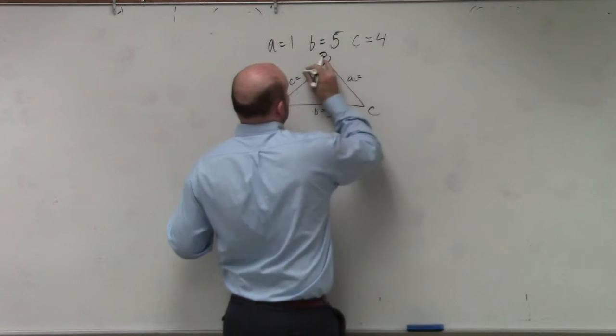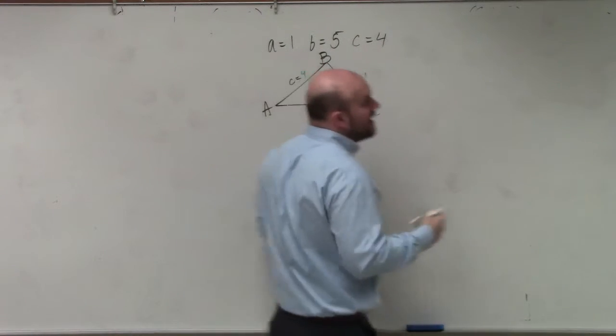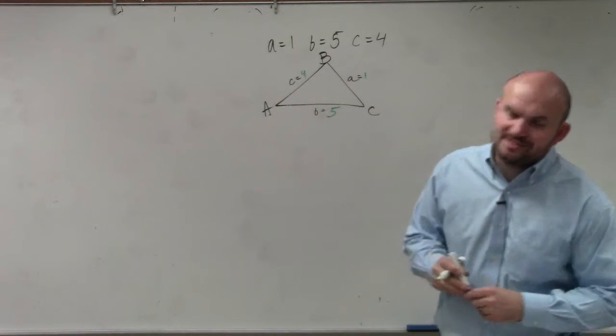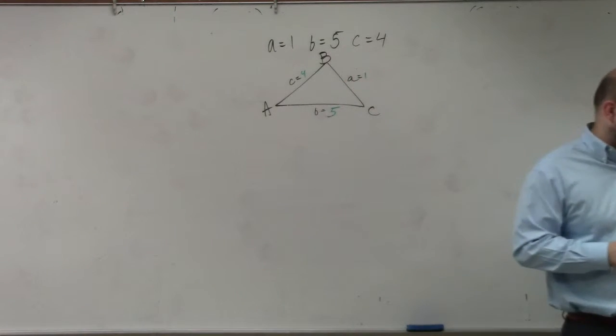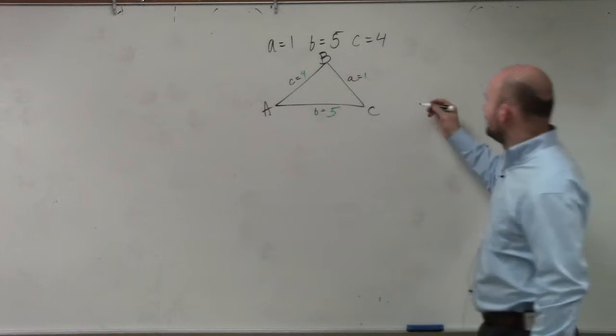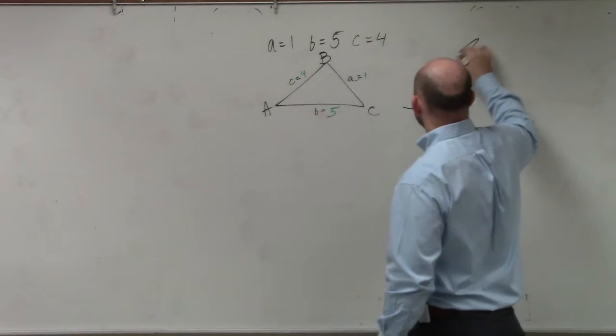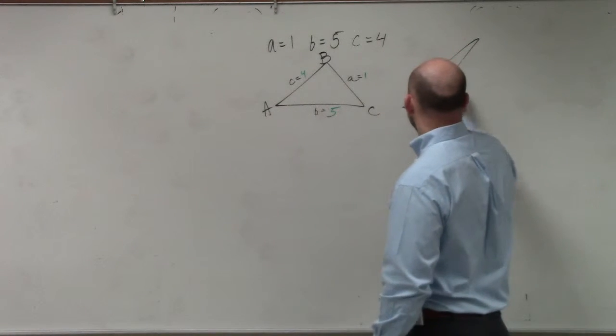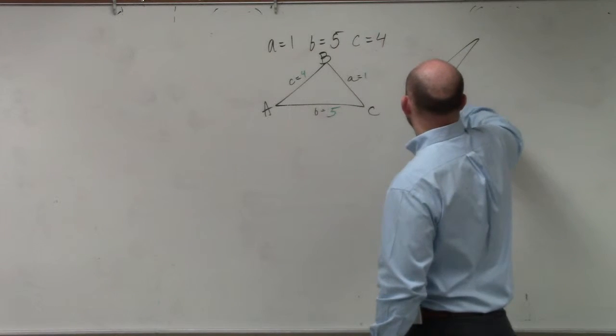So I have 5, here we have 4, and here is 1. Now obviously, ladies and gentlemen, I know my triangle is not proportional, right? I probably should have drawn a nice little obtuse triangle, something that looks like this, right? This probably would have made a little bit more sense.